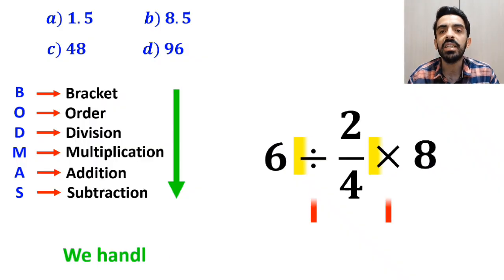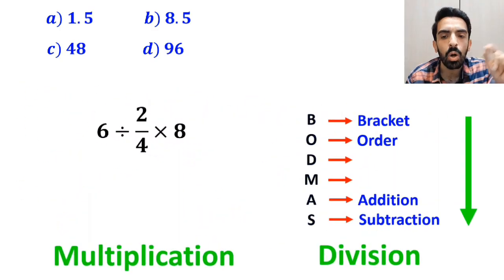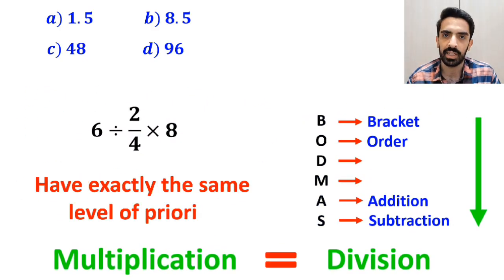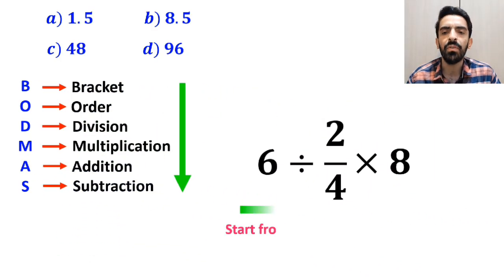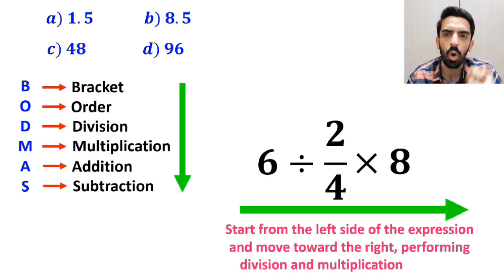In the next step, we handle the division and multiplication. However, it's very important to note that in the BODMAS rule, multiplication and division have exactly the same level of priority. In this situation, the best thing to do is to start from the left side of the expression and move toward the right, performing these two operations in order.